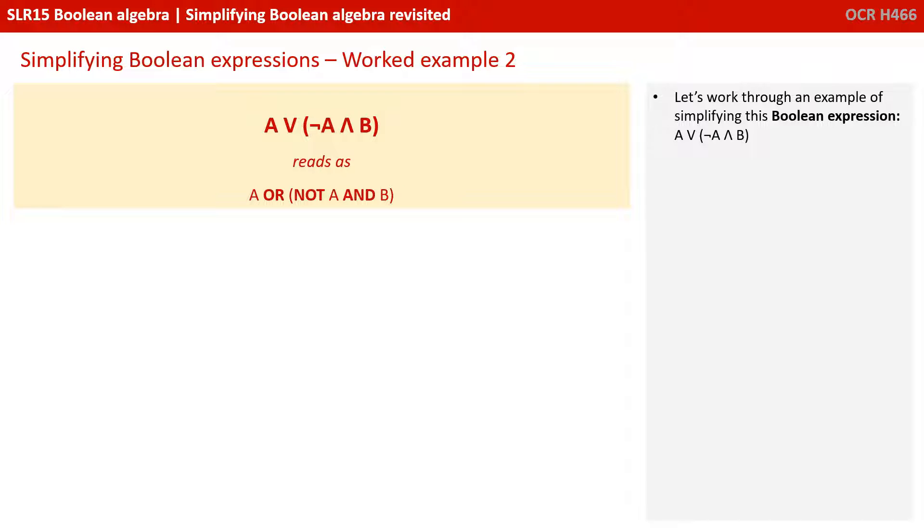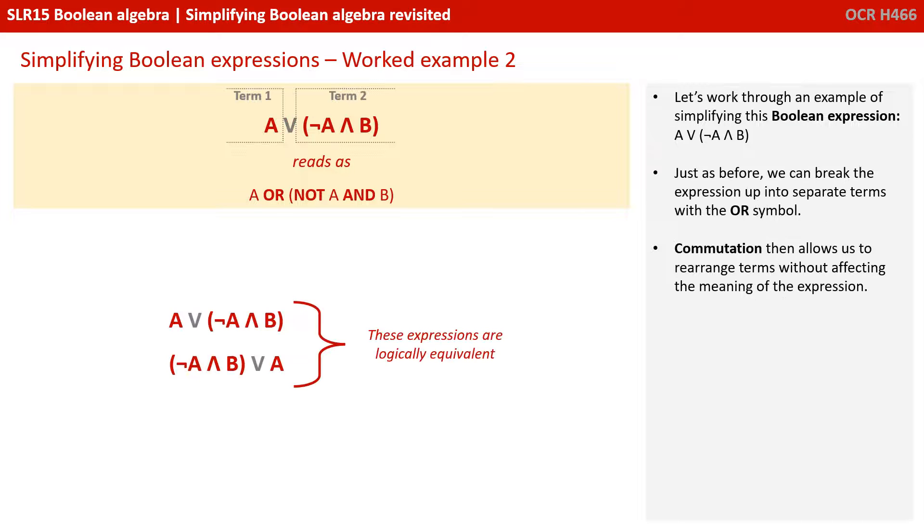Let's work through an example of simplifying the Boolean expression A OR NOT A and B. Just as before, we can break the expression up into separate terms with the OR symbol. The commutation then allows us to rearrange the terms without affecting the meaning of the expression, thus sometimes helping us spot further simplifications.